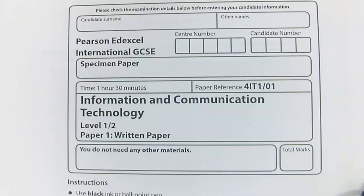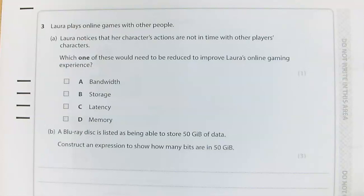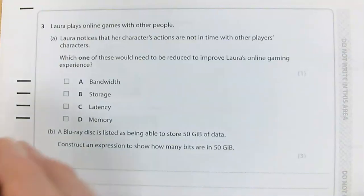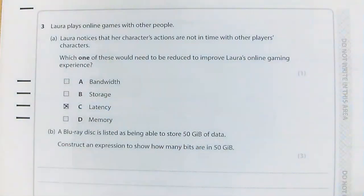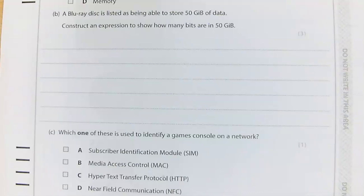Here is question three. We've got someone called Laura who is playing online games with other people. Laura noticed that her character's actions are not in time with the other players' characters. Which one of these would need to be reduced to improve Laura's online gaming experience? It isn't bandwidth, it isn't storage — it is latency. That is the delay, and the clue is that the characters' actions aren't in time, so she'd need to decrease that delay.